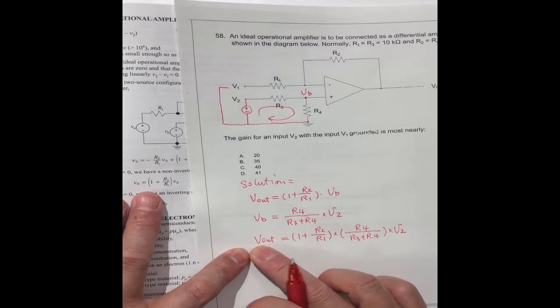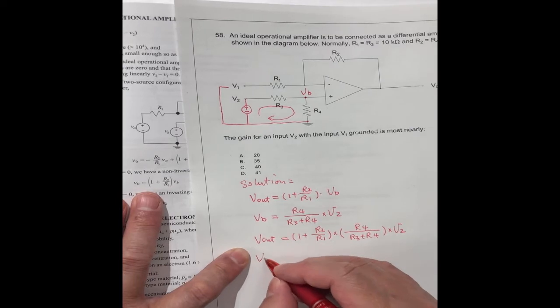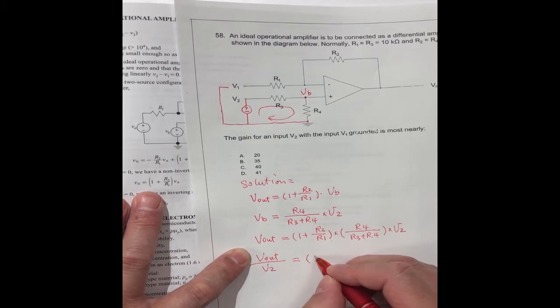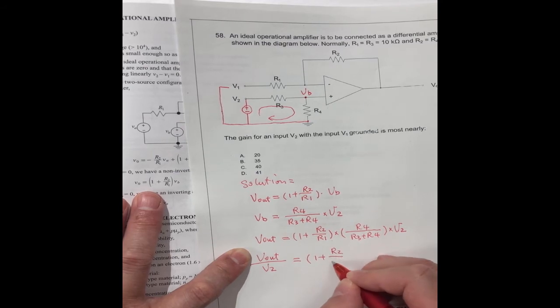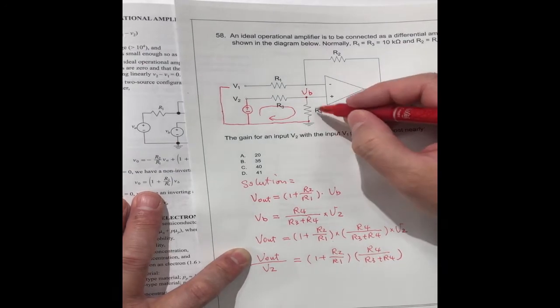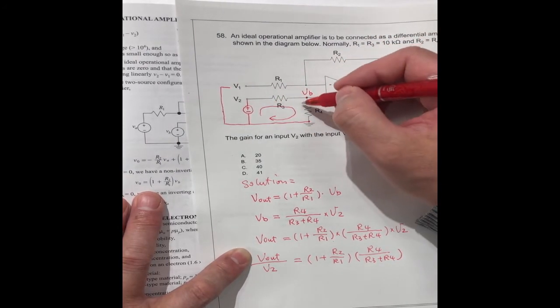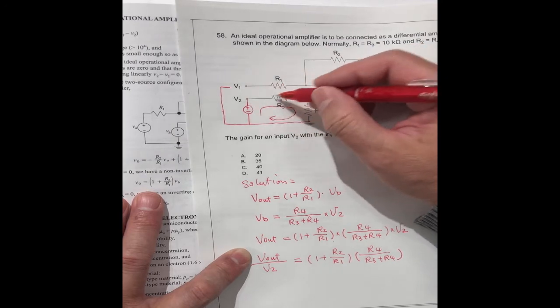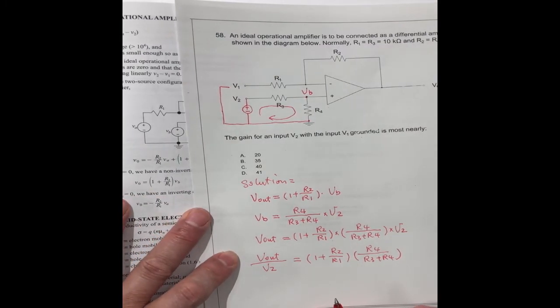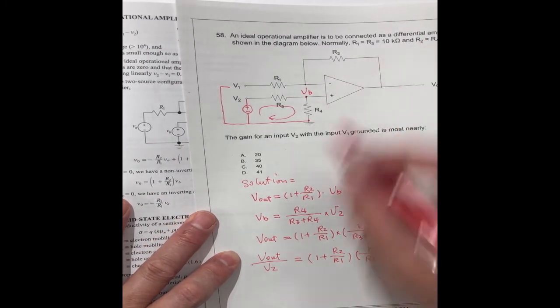We need the gain V out divided by V2. V out, you move the V2 to this side, equals 1 plus R2 divided by R1 times R4 divided by R3 plus R4. Because R4 is this part of R3. Because this voltage is part of the whole circuit, R3 plus R4. So we can put all the numbers in.